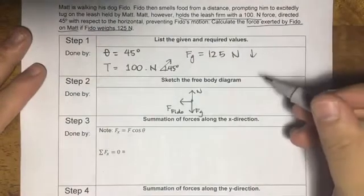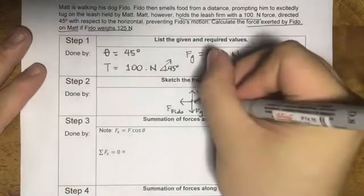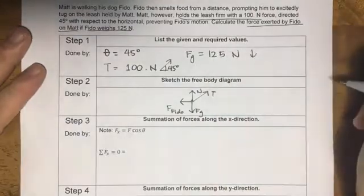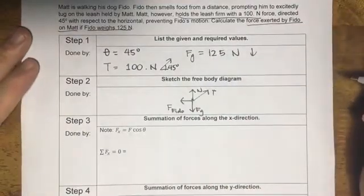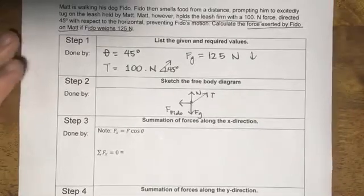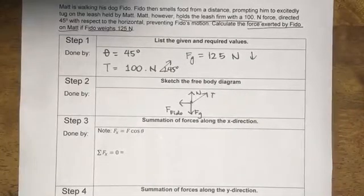And then you have the force of the leash, tension force going this way. So that is the free body diagram. But in order to make things more interesting, let's use a different color to highlight the x and the y direction.